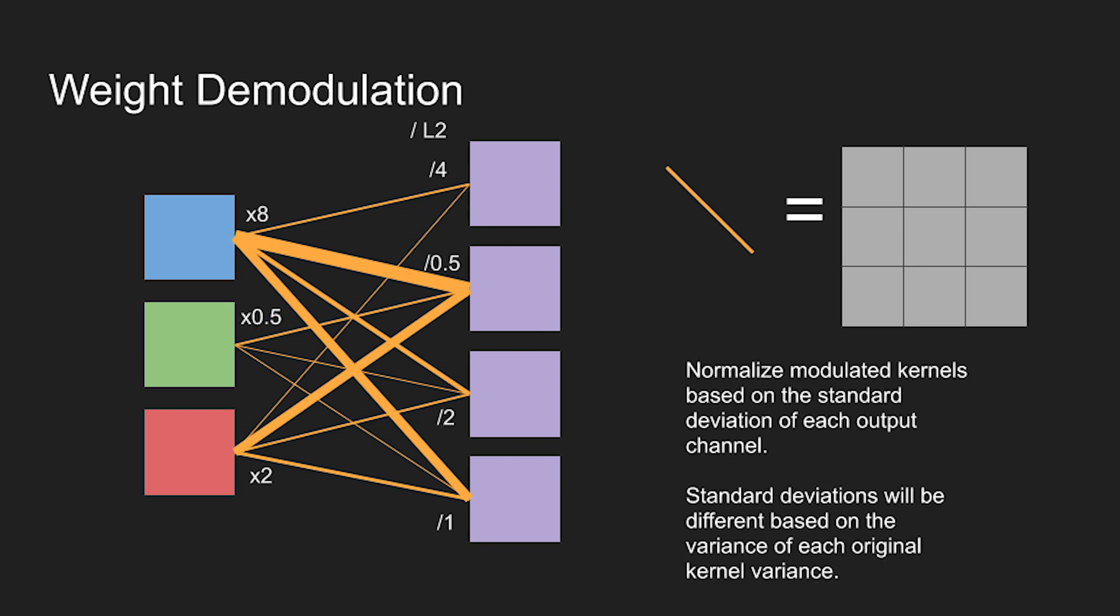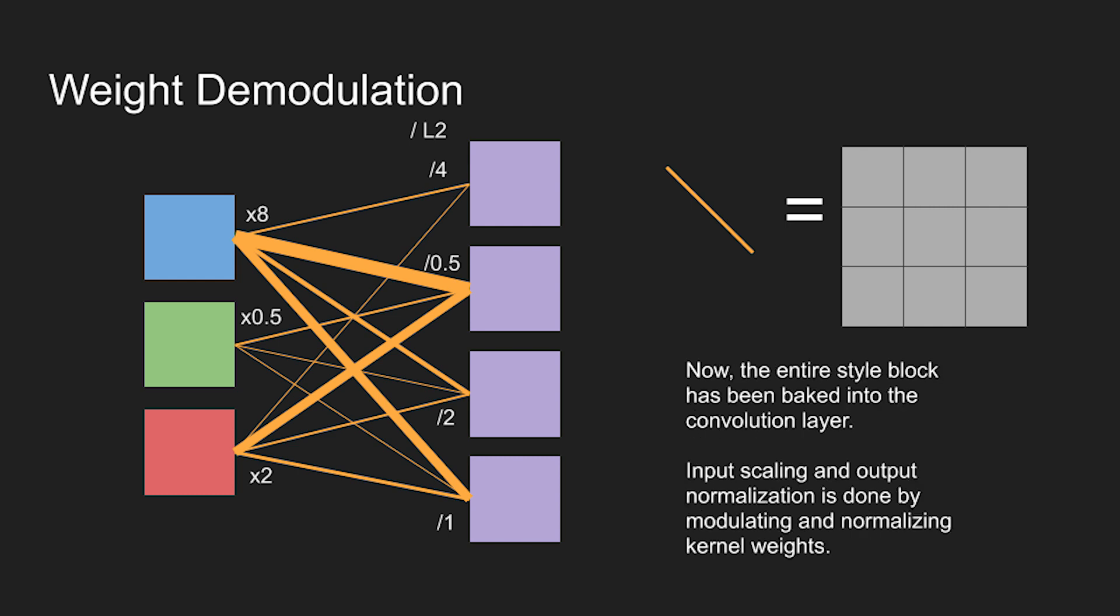Now to complete the style block the outputs must be demodulated which means normalizing them to have a standard deviation of one. Assuming the inputs have a standard deviation of one since they were also normalized at one point, we can normalize the outputs by dividing the modulated weights by their L2 norm. Thus convolution demodulation divides each modulated kernel by the L2 norm of all the weights leading to each output.